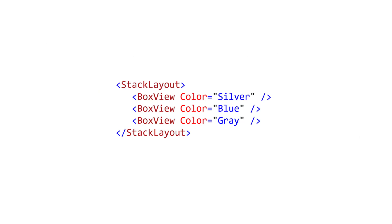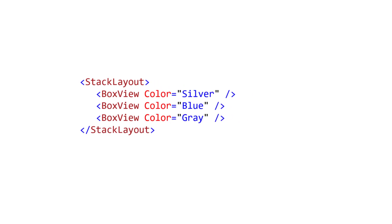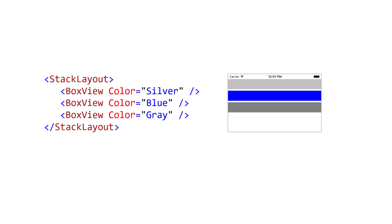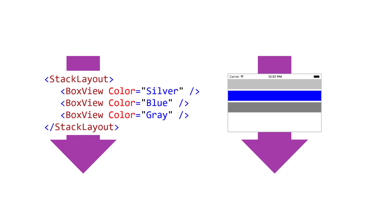You can also add children to a Stack Layout in XAML. The layout order of children is determined there by the order in which they are added to the children collection. For views added in XAML, this is the textual order.